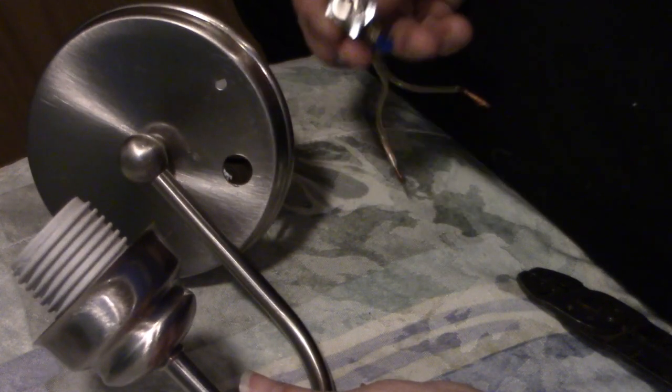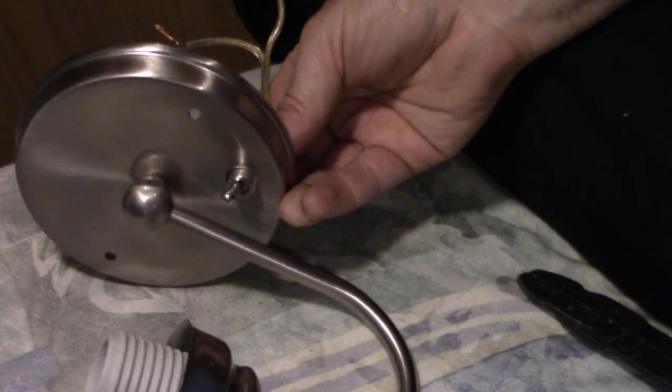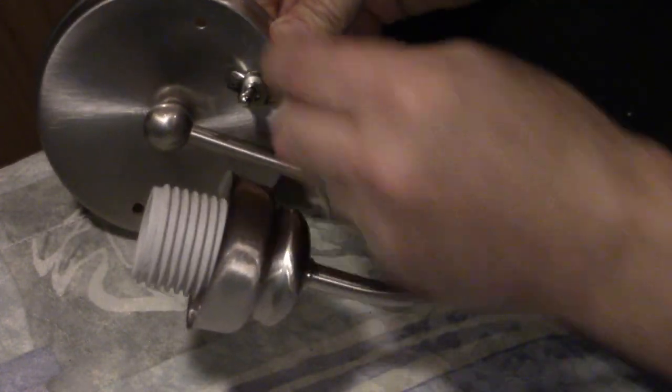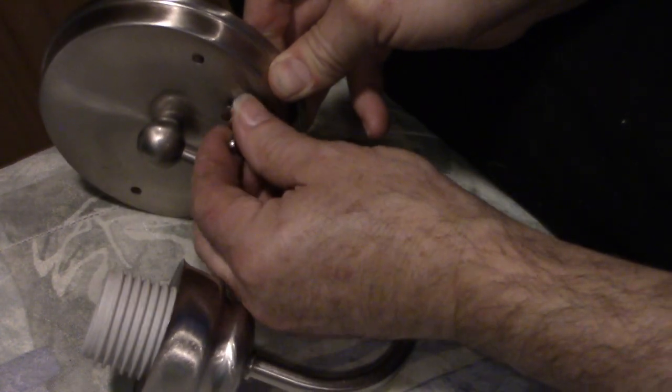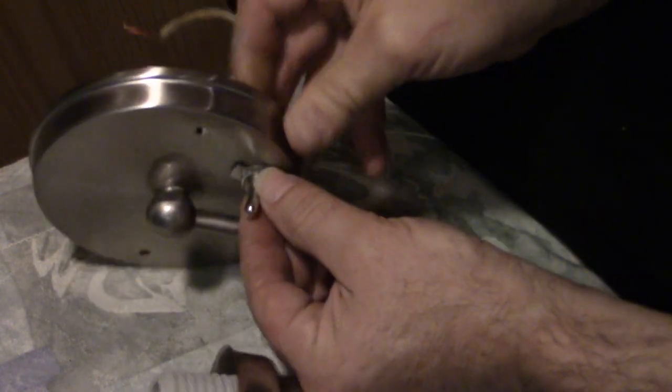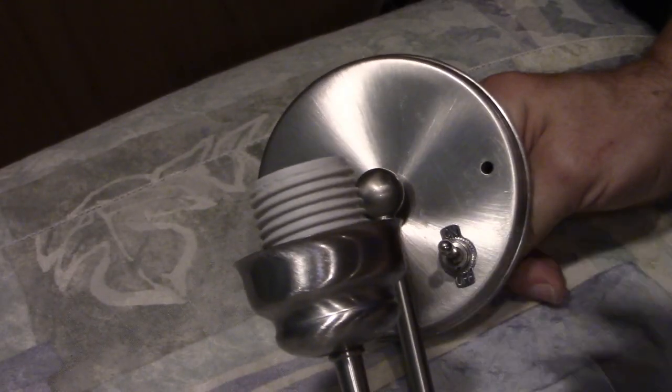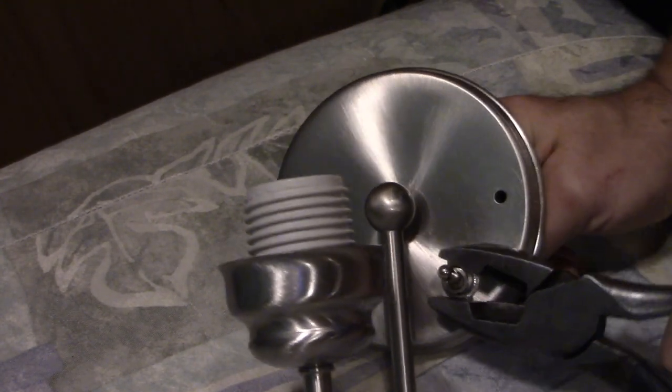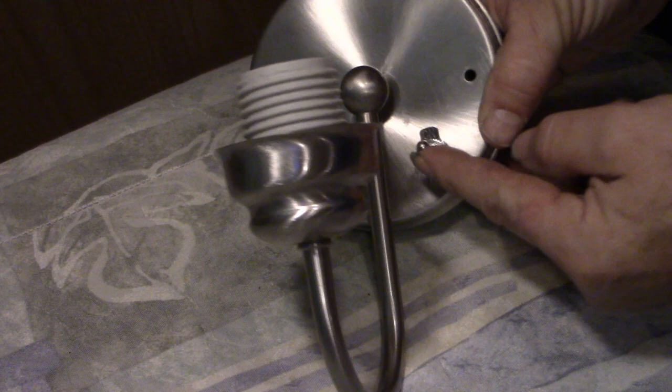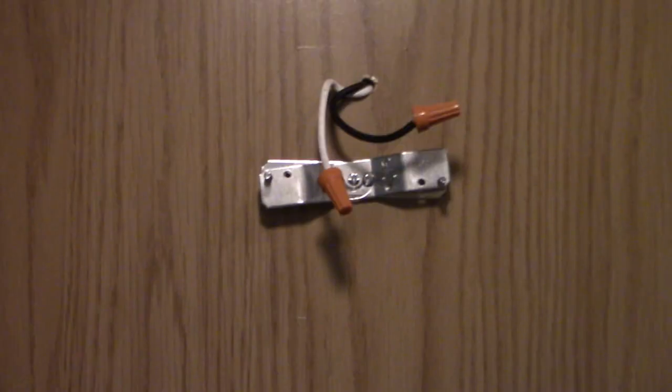Now we're ready to put the switch into the light fixture. Insert it through that way—off is down, so that goes that way. And then this screws on top of it right like that. All right. Off and on. All right, that's great, and now we can get it back up on the wall.